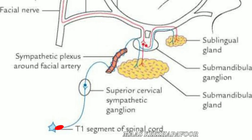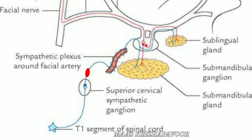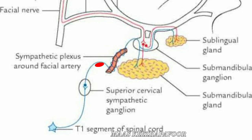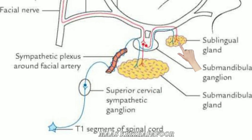The sympathetic fibers start from the T1 segment of the spinal cord and get relayed in the superior cervical sympathetic ganglion. The postganglionic fibers pass through the sympathetic plexus around the facial artery and reach the submandibular ganglion. Without relaying in the submandibular ganglion, the fibers reach both the submandibular and sublingual salivary glands.